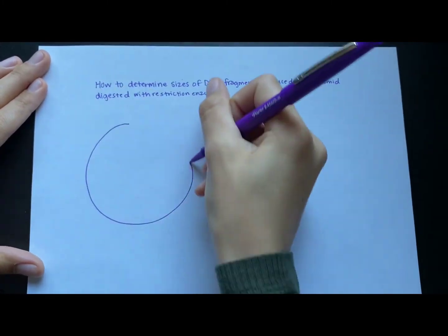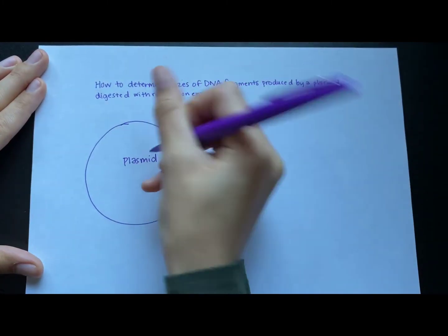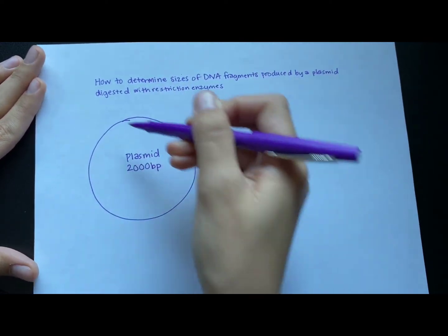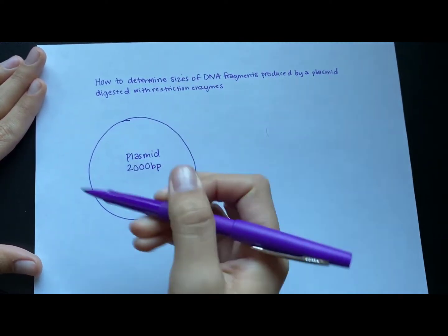Let's say you have a plasmid, a piece of circular, double-stranded DNA that is 2,000 base pairs long. And among all the A's and C's and T's and G's that make up the sequence of this plasmid, there are restriction sites.